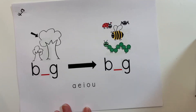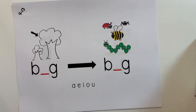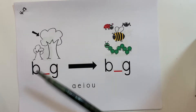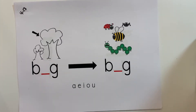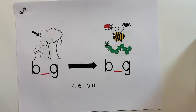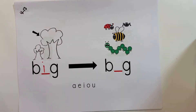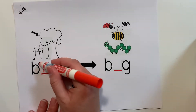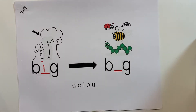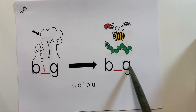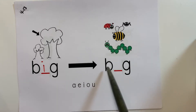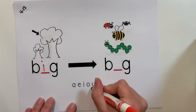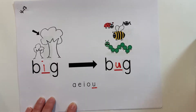Let's go ahead and try some together. This picture is pointing to a tree that is big — B-I-G. The middle sound is I. I want to change that to bug — B-U-G. What is my new middle sound if I want to change that word to B-U-G? U is my new middle sound.